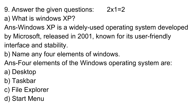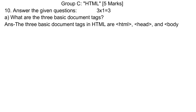Question 9. Answer the given questions. A. What is Windows XP? Answer: Windows XP is a widely used operating system developed by Microsoft, released in 2001, known for its user-friendly interface and stability. B. Name any four elements of Windows. Answer: Four elements of the Windows operating system are: A. Desktop, B. Taskbar, C. File Explorer, D. Start menu. Group C: HTML.